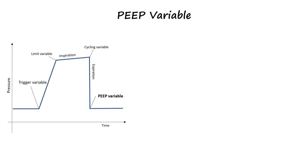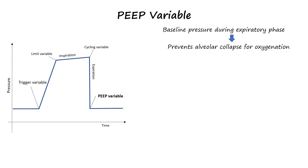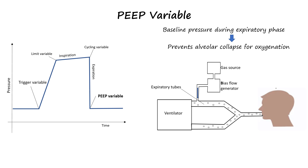Post-end expiratory pressure, or simply PEEP, is the final phase variable in a breath cycle and describes the baseline pressure which remains after inspiratory pressure is released as the patient exhales. This baseline pressure keeps the alveoli open to allow for adequate oxygenation and also recruits closed alveoli in the sick lung to improve oxygenation. The expiratory phase in modern ventilators is generally a fairly passive time where the only thing happening is a slow bias gas flow seeping out of the circuit via the expiratory valve.